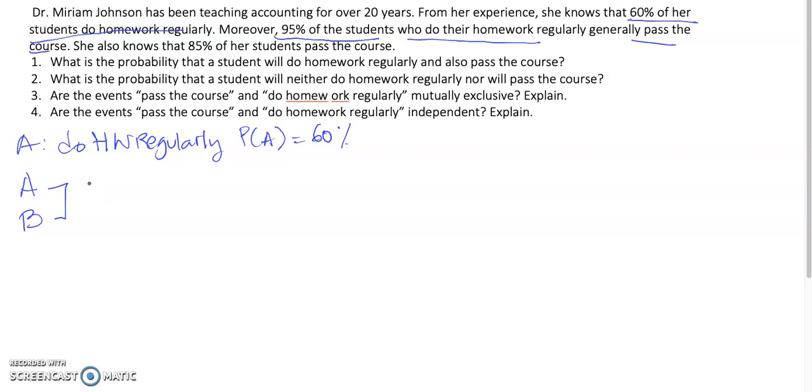So, we say that it is a conditional probability they pass the course after doing their homework. That is 95%. The prior probability is doing homework and the event coming after the prior probability is passing the course. Now, the next one,